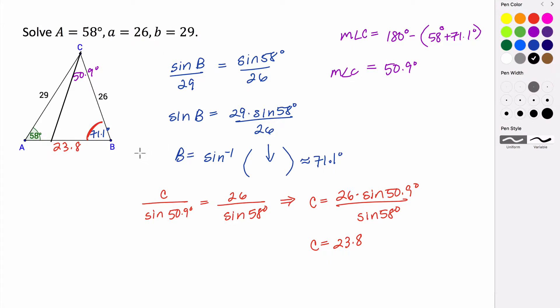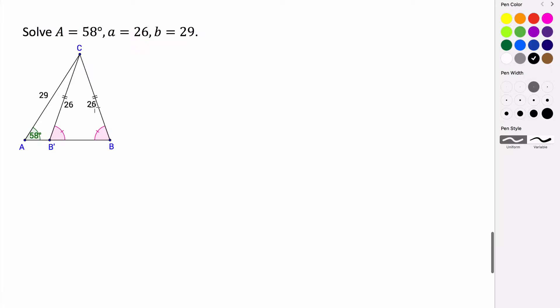We can see that we have this side length here which is congruent to this side here. We know that this was 71.1 degrees. If we look at triangle B'BC, this triangle is an isosceles triangle because it has two congruent sides, which means these base angles are congruent. So that means that this measure here is also 71.1 degrees.